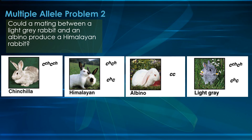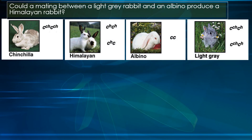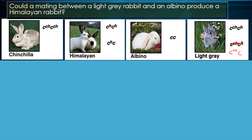What we want to know is if we combine a light gray and an albino, can we get a Himalayan? There's a little error to fix — the other genotype is C^CH C, and that can also be light gray. Let's take a look at this.